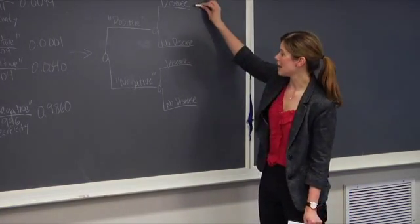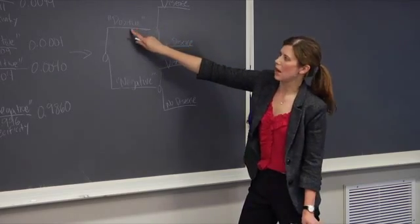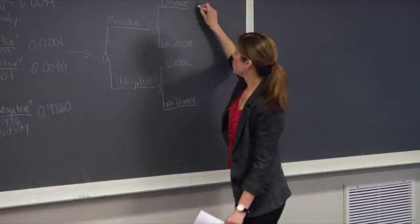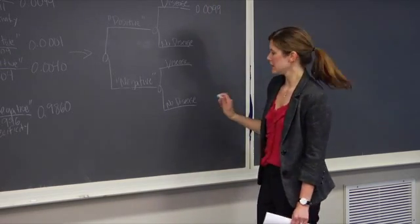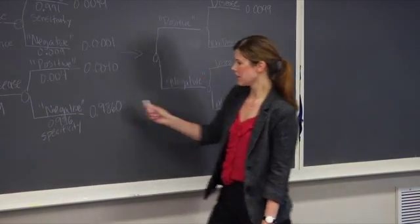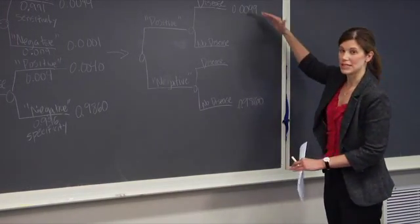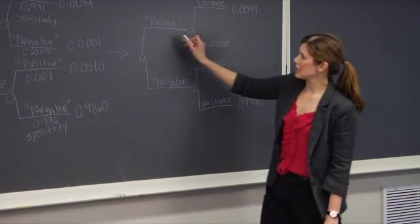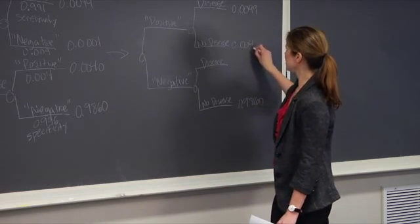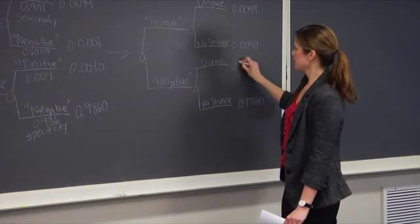The first step in flipping the tree is to match up the probabilities at the end of the tree. The probability of having a positive test and the disease is equivalent to the probability of a disease and a positive test, or 0.0099. Similarly, the probability of a negative test and no disease is the same as no disease and a negative test, or 0.9860. The probability of a positive test and no disease corresponds to no disease and a positive test, or 0.0040. And a negative test and disease is equivalent to disease and a negative test, or 0.0001.